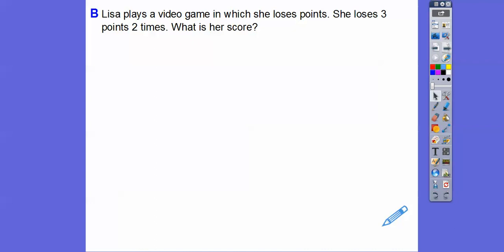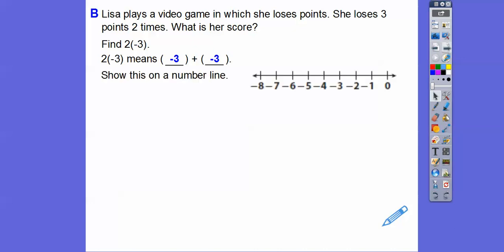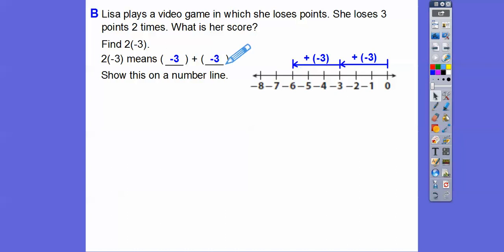Lisa plays a video game in which she loses points. She loses three points two times — so what's her score? That's two times negative three, which is the same as negative three plus negative three. On a number line, we start at zero, go to the left three because it's negative, then go to the left three again. It ends at negative six. So two times negative three is also negative six — she has a score of minus six on her video game.